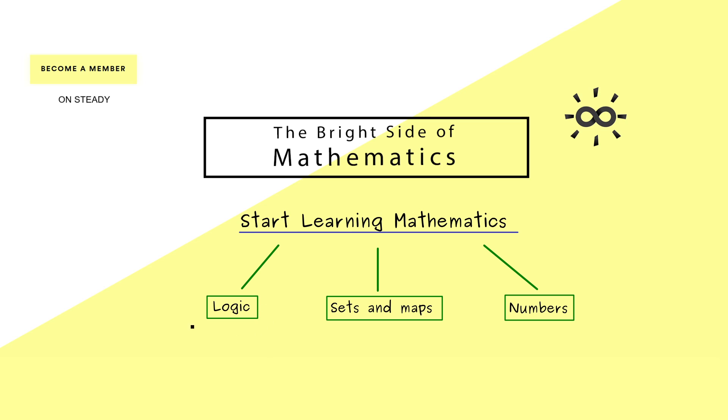We start with some basic logic, which is important because we need to know what, for example, a proof is. Afterwards, we can talk about the basic building blocks of the mathematical world, which is given by sets and maps. And with that, we are able to define all the different numbers we need.